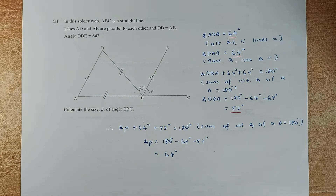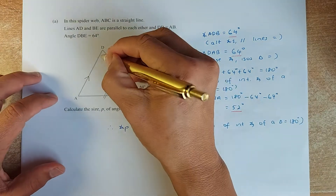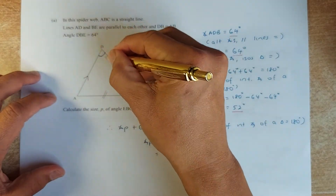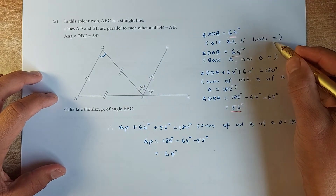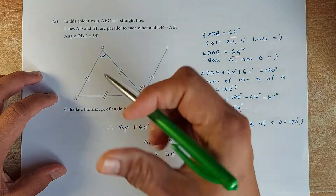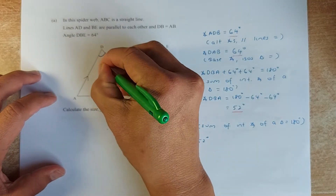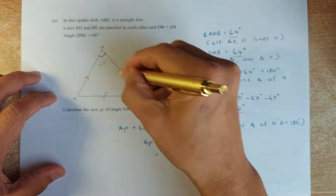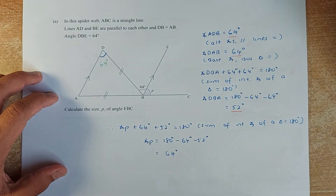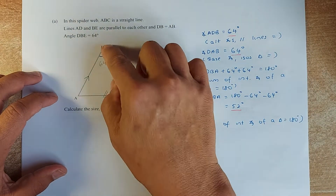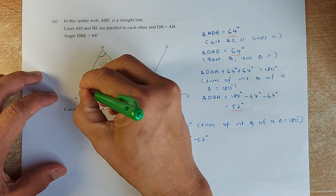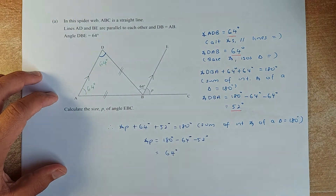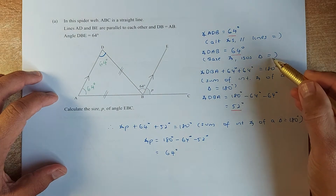First, we find angle ADB. That angle is the same as 64 degrees because alternate angles on parallel lines are equal. So angle ADB is 64 degrees. Since this is an isosceles triangle, angle DAB is also 64 degrees because the base angles of an isosceles triangle are equal.